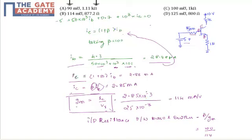So for the transconductance, we have the formula IC by VT. So IC we have obtained, that is 2.85 milliamps, and VT value is 25 millivolts. So if you simplify, we obtain transconductance as 114 millisiemens.